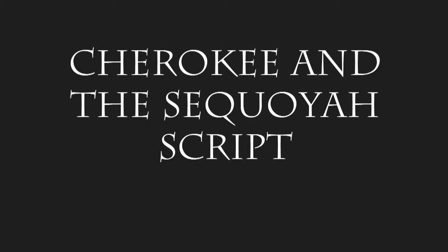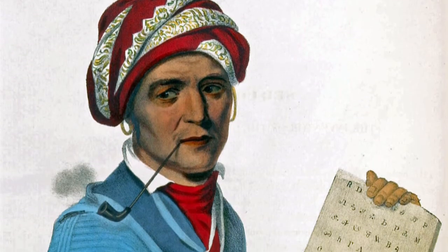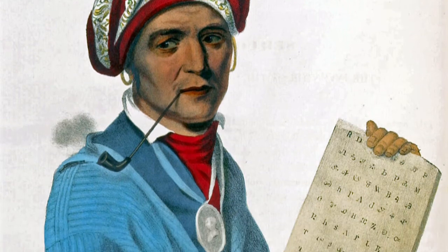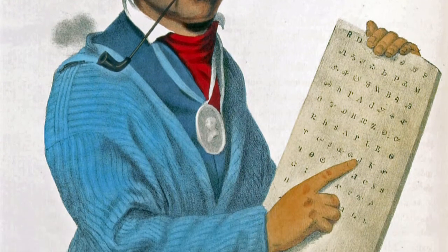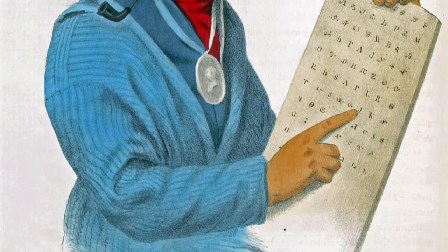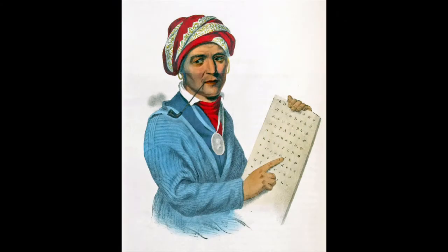The story behind the man named Sequoia is as much mystery as it is epic. Born in the Cherokee town of Tuskegee in 1770, Sequoia became a polymath whose career included service as ambassador, doctor, soldier, and inventor. Despite the conflicting accounts of his background, there was little argument that his most consequential legacy was the script now named after him, which he completed by 1821.